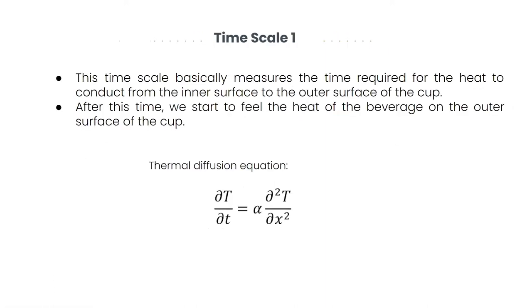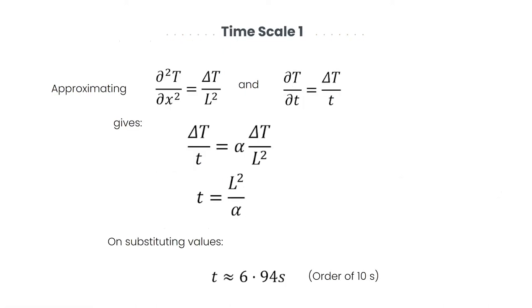Observing the problem, we found two timescales governing. The first timescale basically measures the time required for the heat to conduct from the inner surface to the outer surface of the cup, that is by conduction. After this time, we start to feel the heat of the beverage on the outer surface. We approximated the terms of the thermal diffusion equation and found the value of the timescale to be L squared by alpha, which came out to be on the order of around 10 seconds.